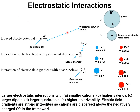Let us examine the electrostatic interactions between a gas molecule and the extra-framework cation, which can be either lithium, sodium, potassium, magnesium, calcium, strontium, or barium. Here I also indicate the size of the cation — the radius of the cation in angstrom values — where R represents the distance between the center of the gas molecule and the center of the cation.